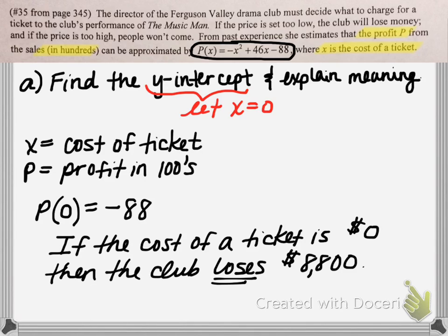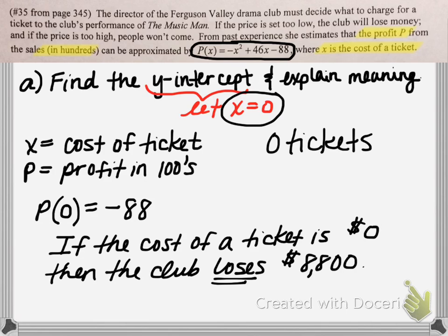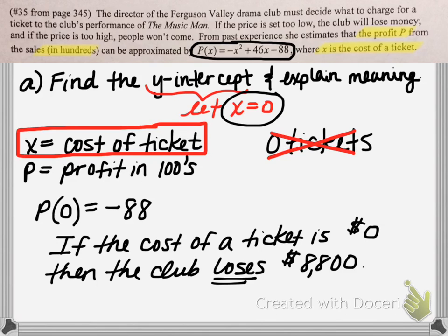One area to be careful about on this particular problem: when we let x equal 0, a lot of times people make the mistake of thinking that represents 0 tickets — as if we're not selling any tickets. But that's incorrect. If you've taken the time to write down your variable key, you can see that x doesn't represent the number of tickets, but rather x is the cost of a ticket. So we're saying if we're charging $0 for a ticket — if the tickets are free — then the club is going to lose $8,800.